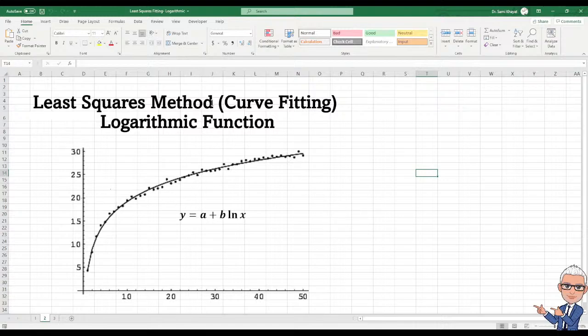The least squares method is a method to find the best fitting of curve or line depending on the function we will use. Today we will talk about this kind of function which we call logarithmic function. If your data is like this, your best curve fitting is the logarithmic function. Let's see how we will do that one.